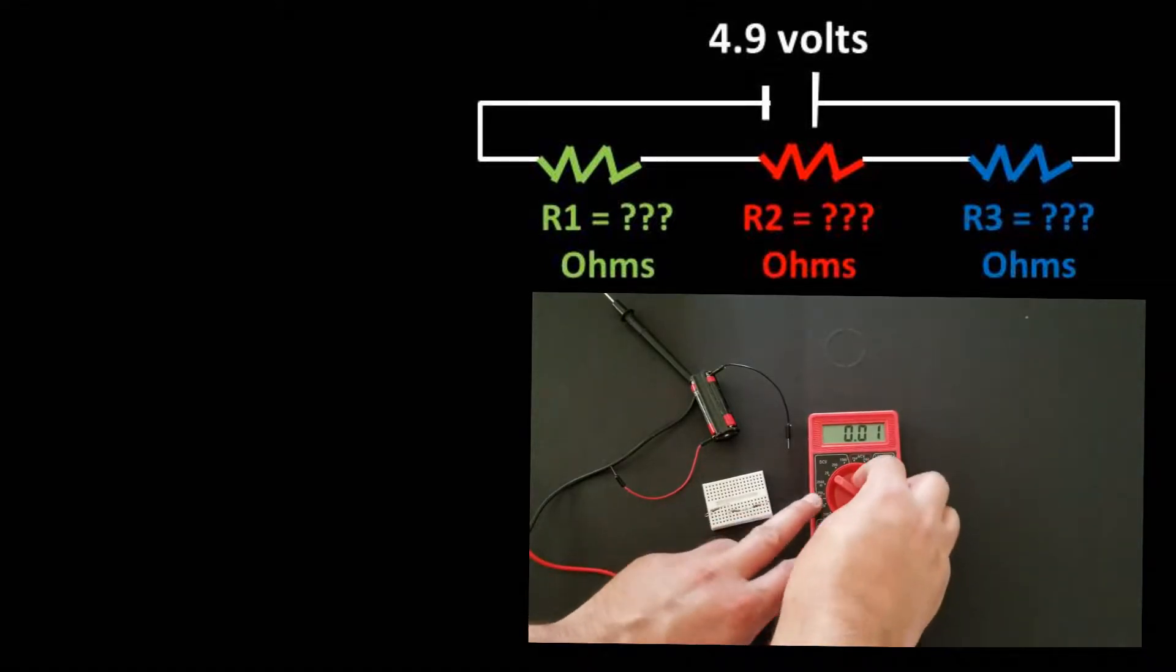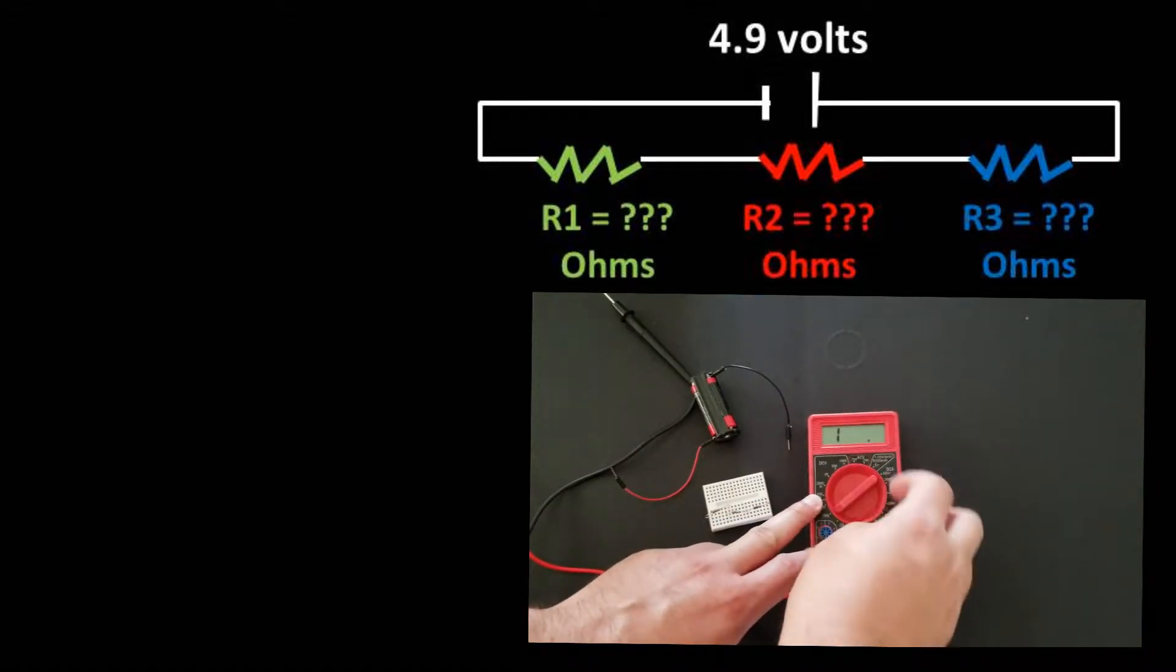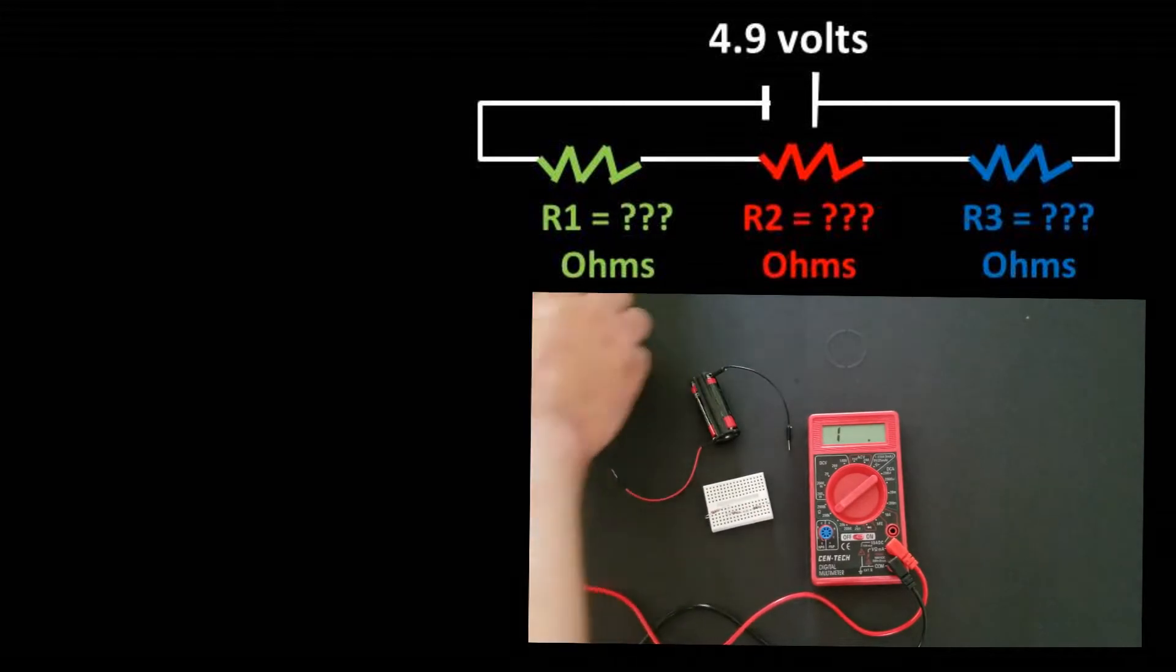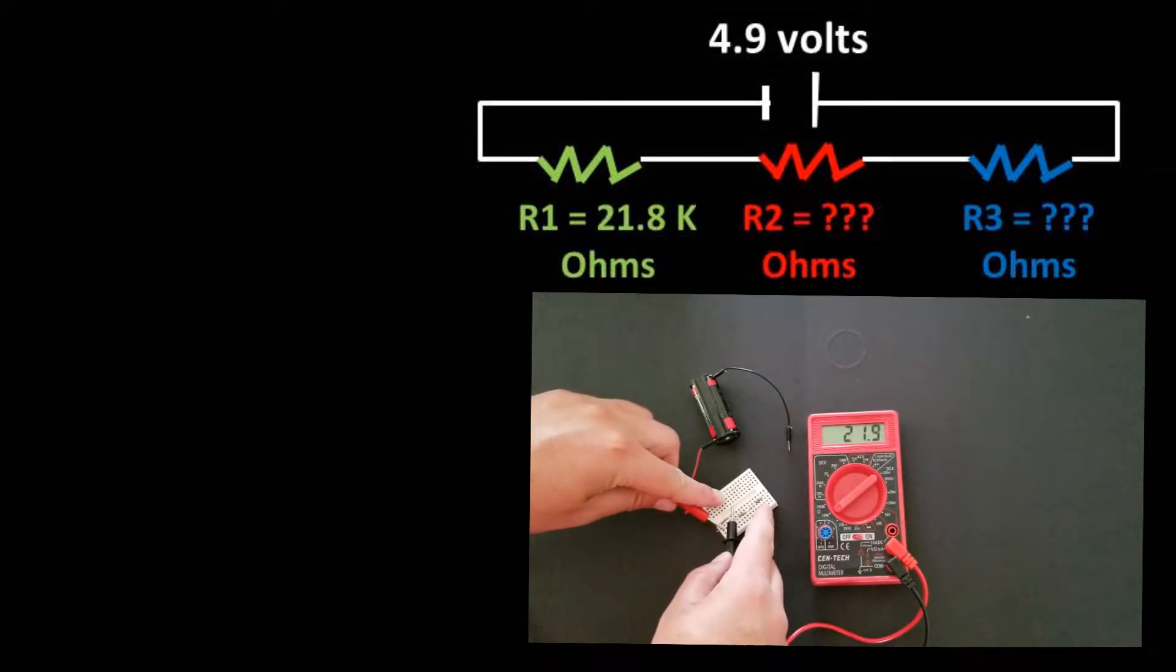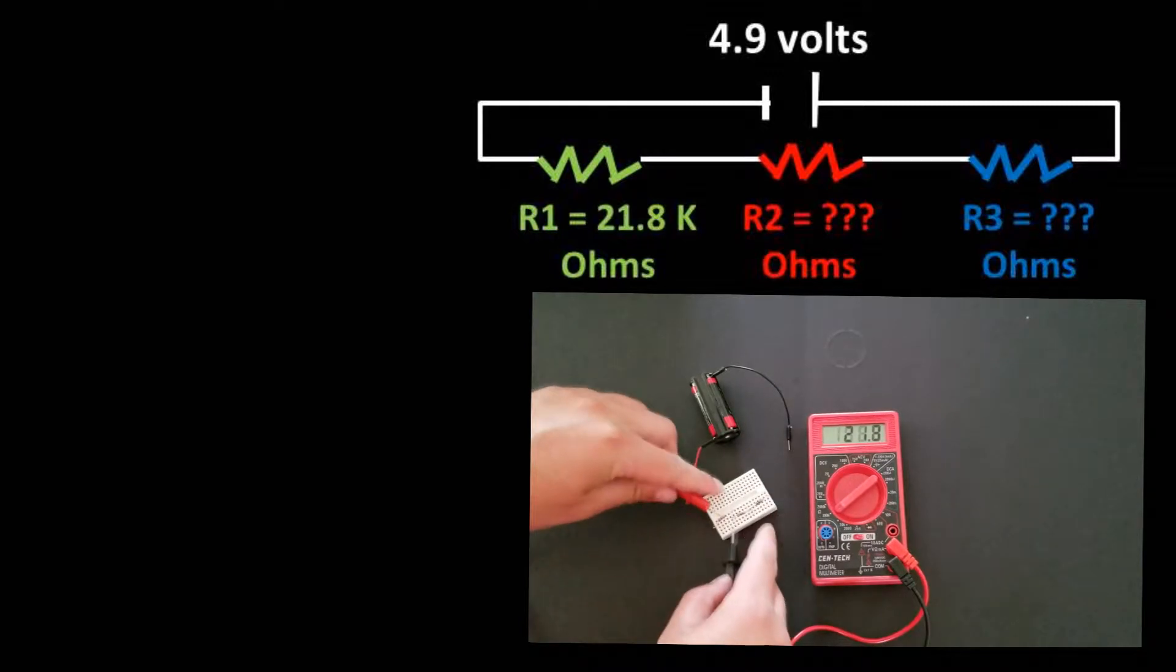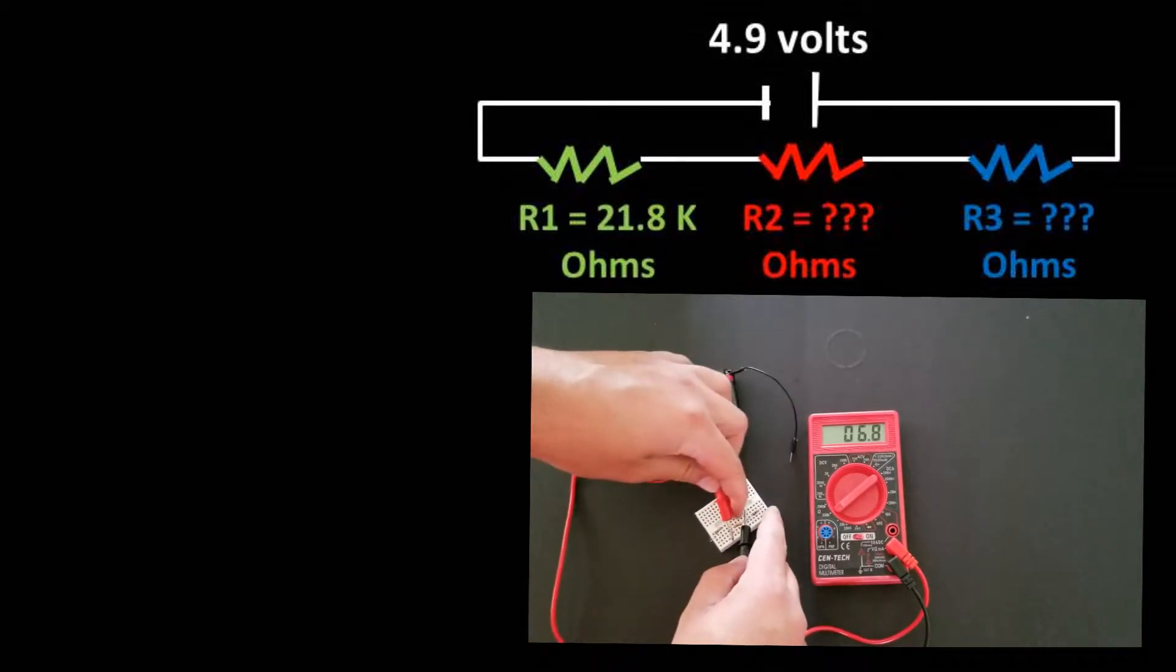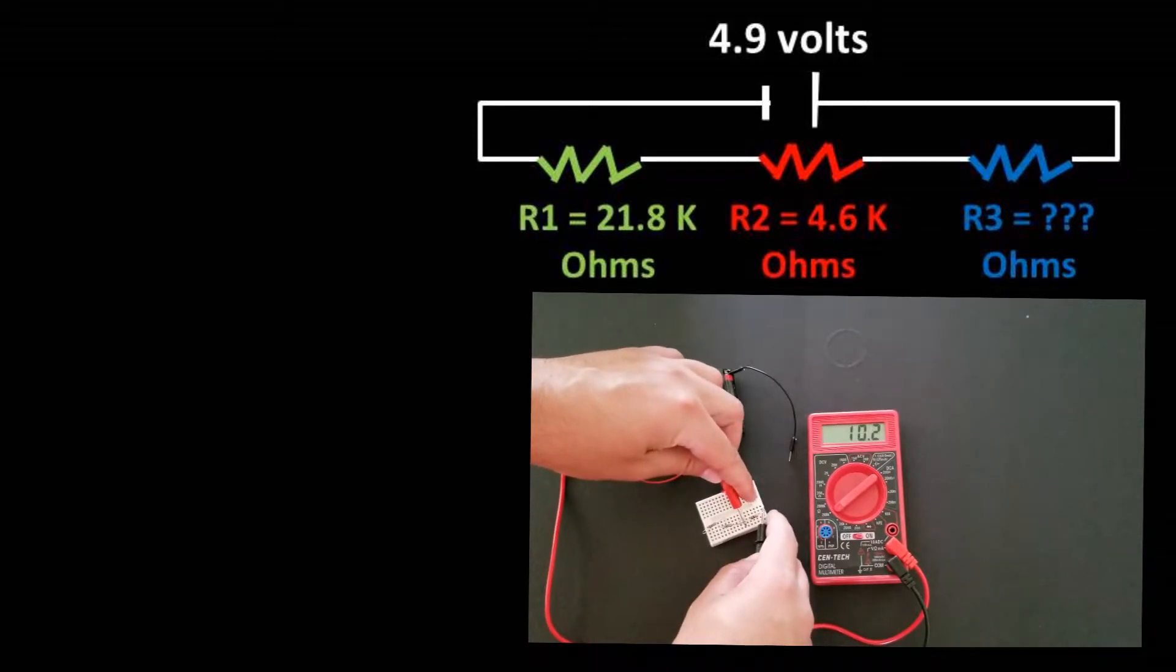We now need to find the resistance of each resistor. We can do this by switching to ohms on our multimeter and placing the probes on either side of each resistor. We get a resistance of resistor 1 of 21.8 thousand ohms, a resistance of resistor 2 of 4.6 thousand ohms, and a resistance of resistor 3 of 9.8 thousand ohms.